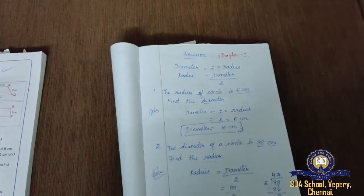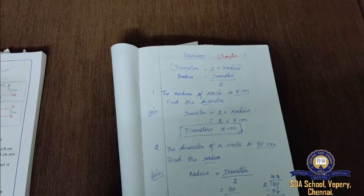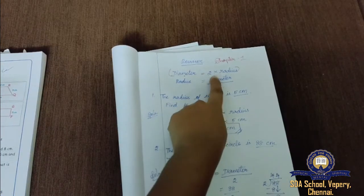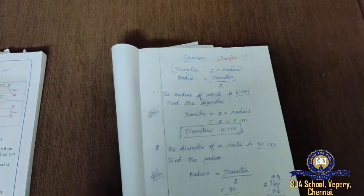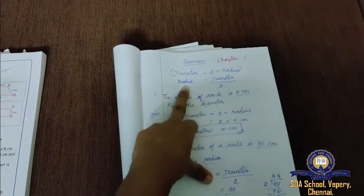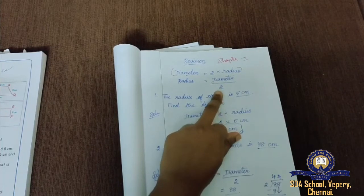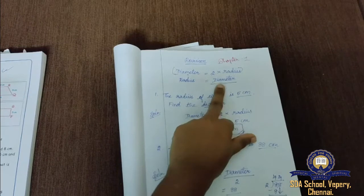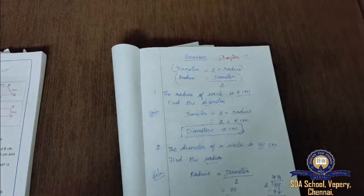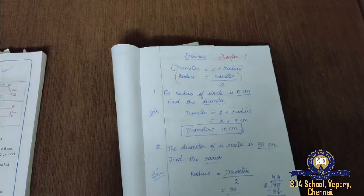What is the formula of diameter? Diameter equals 2 into radius. If we want to find out the diameter, we multiply the radius by 2. And if we want to find out the radius of a circle, we divide the diameter by 2. So: diameter = 2 × radius, and radius = diameter ÷ 2.